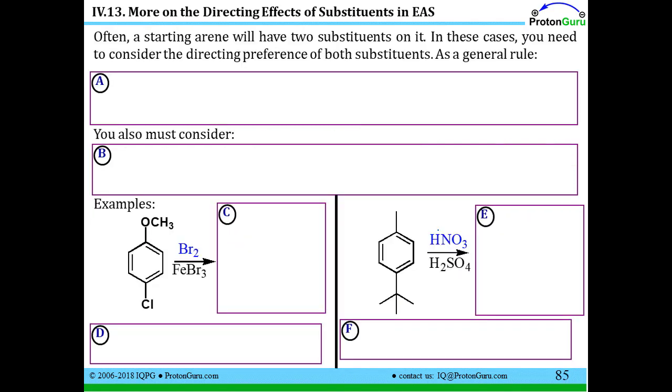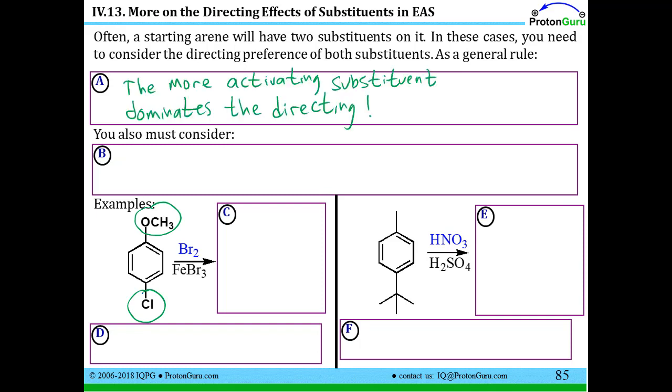The other thing we can think about is, what if you have two substituents on the benzene ring or three substituents on the benzene ring or four before you put another substituent on? How do I know where to put the next substituent when there are already two there? Well as a general rule, you only look at the more activating substituent of the two, and that more activating substituent will dominate the directing effect. You also have to consider, to some extent, the sterics or the size of the group. It's easier to substitute next to a smaller group, of course.